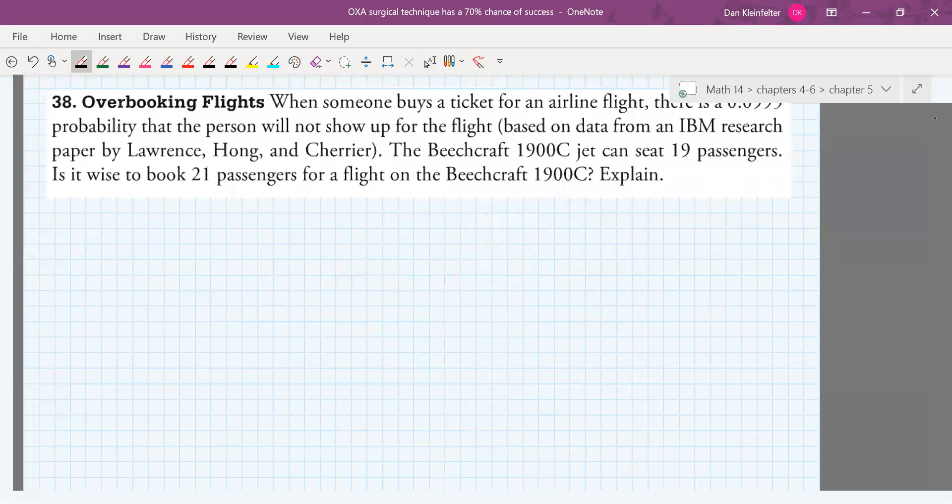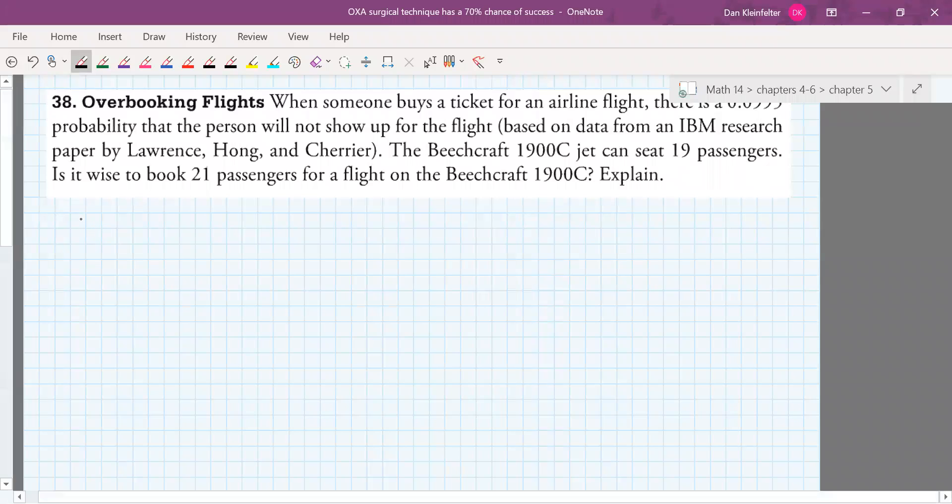So if the jet can hold 19 people, and we want to know, well, if we book 21 people, then we're basically gambling that people are not going to show up. Because, of course, if 21 people actually show up, then we have to turn away two people, reschedule them on a different flight or something, which is going to annoy people. So we want to decide if that's a reasonable gamble or not. So what I would do is think about under what circumstances this is going to be a problem.